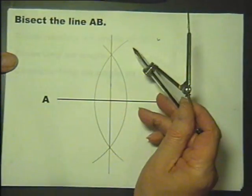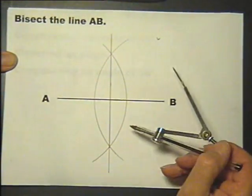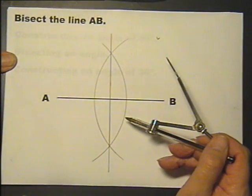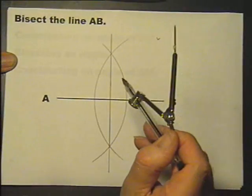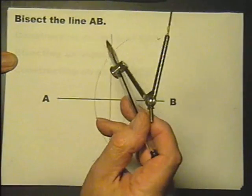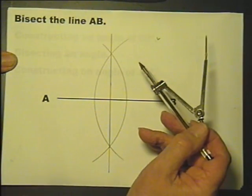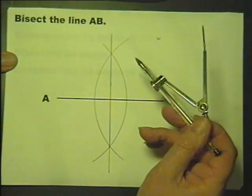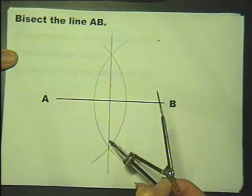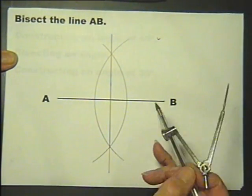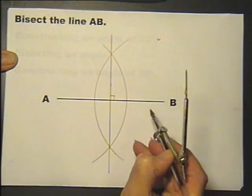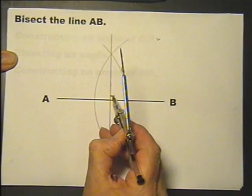In an exam these arcs must be really clear, dark rather than faint, because the examiner will give you marks for seeing how you have constructed. That's the keyword: construct means use a pair of compasses. This line going through here is called the bisector of AB because it cuts AB exactly in half, and it cuts it in half at right angles. That's worth noting as well.